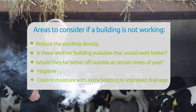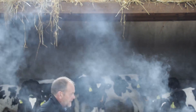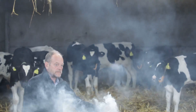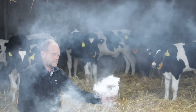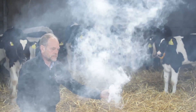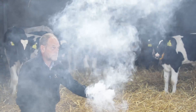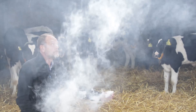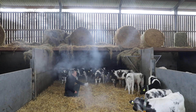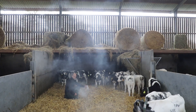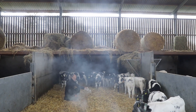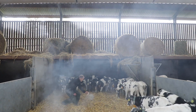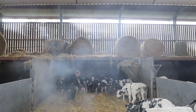We can also use smoke bombs, which are useful for three separate jobs. First, if we let off the smoke and it doesn't go away, we know we don't have enough ventilation. Second, if we let off the smoke bomb and it's gone straight out the door in five seconds, we know we have too much air speed.